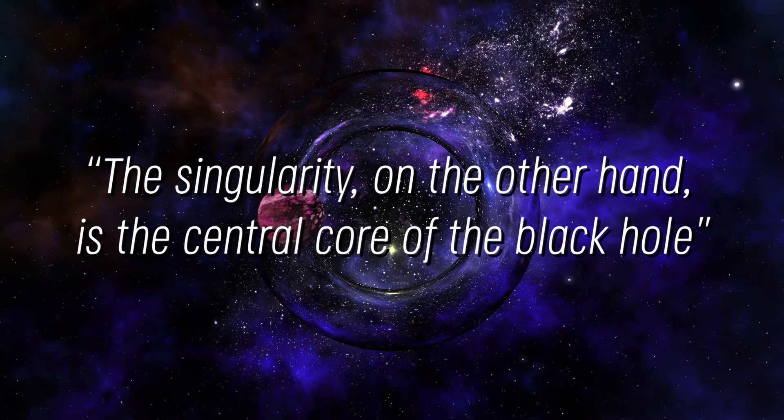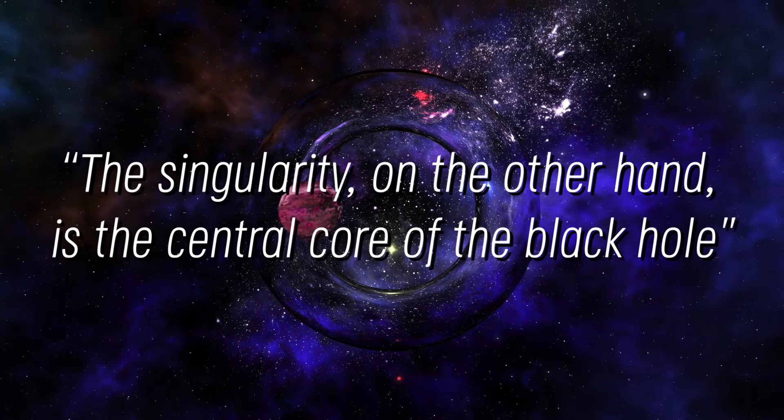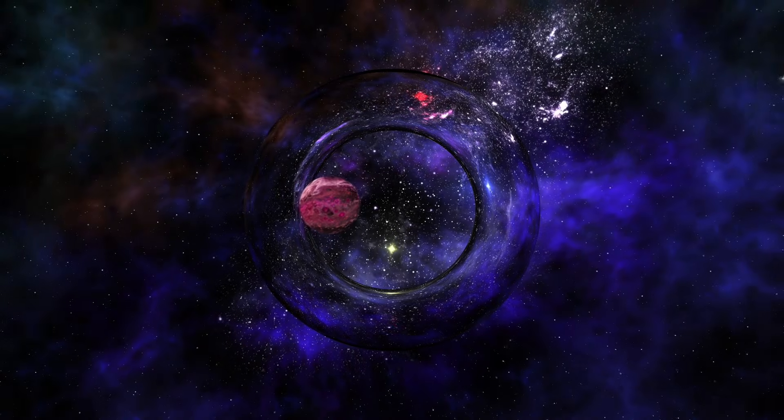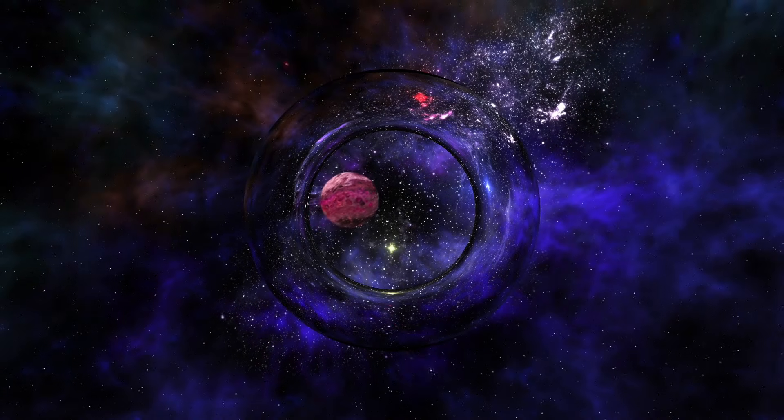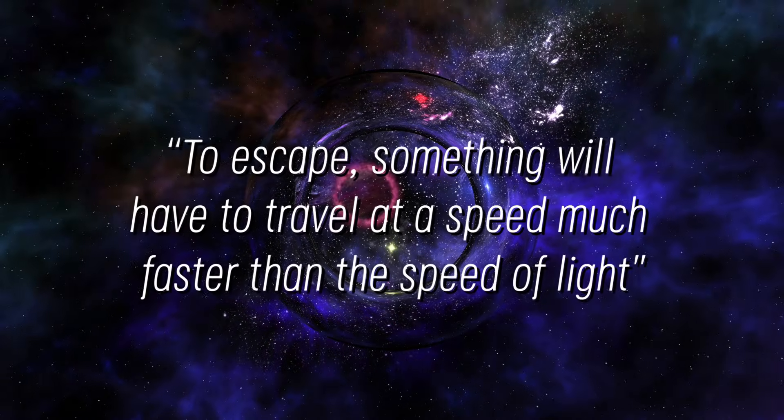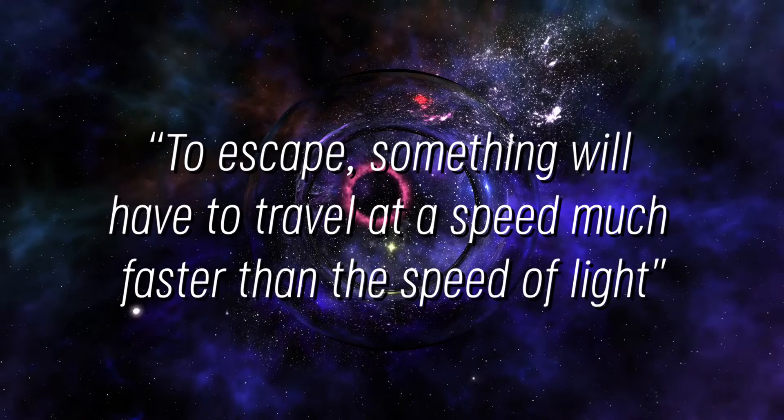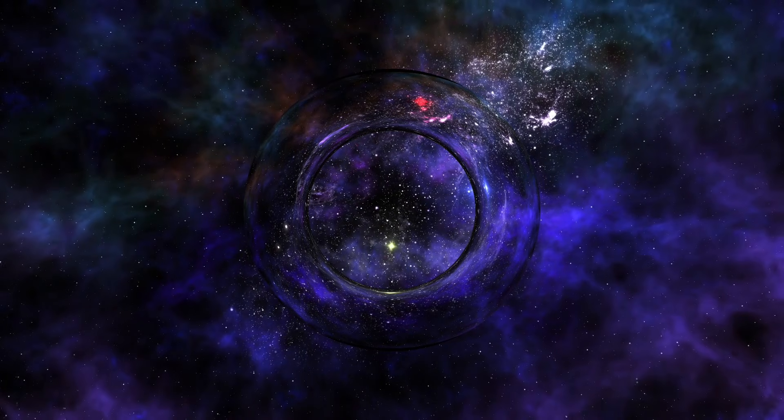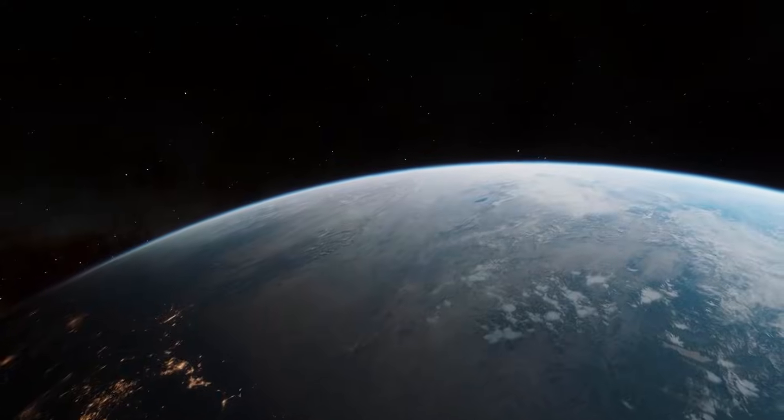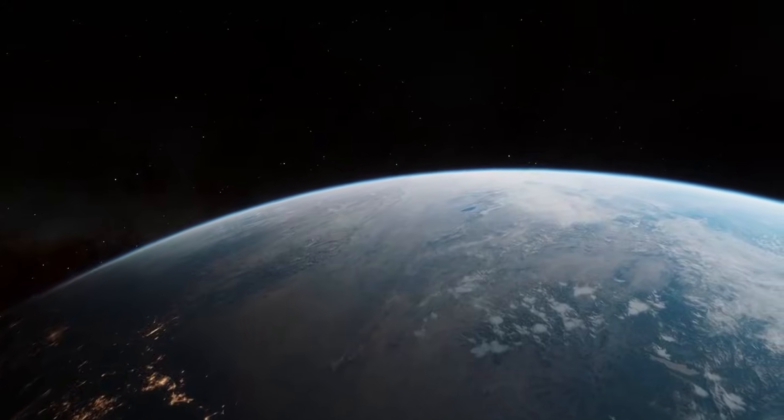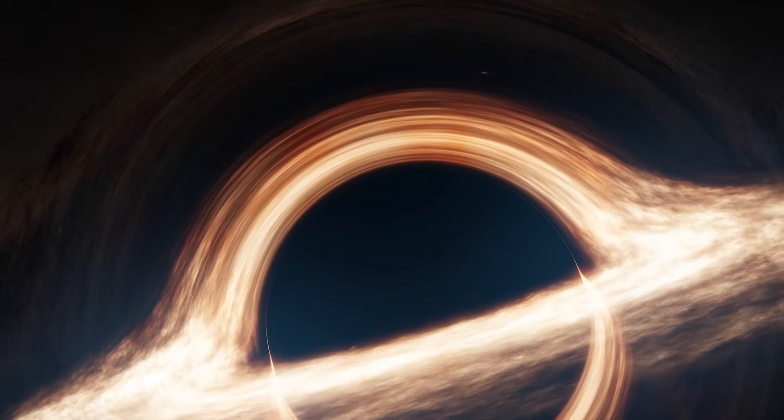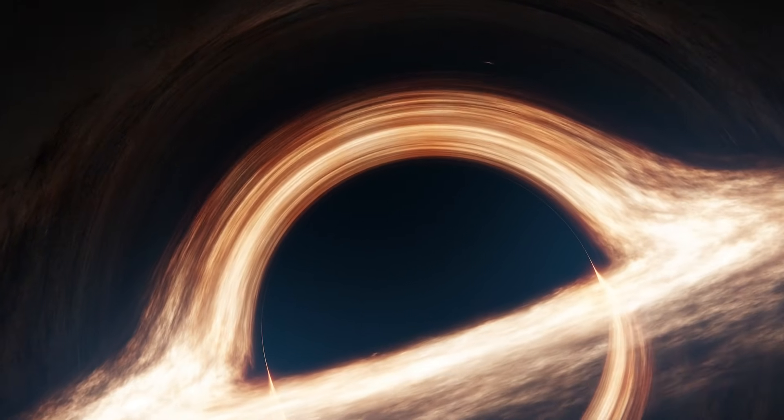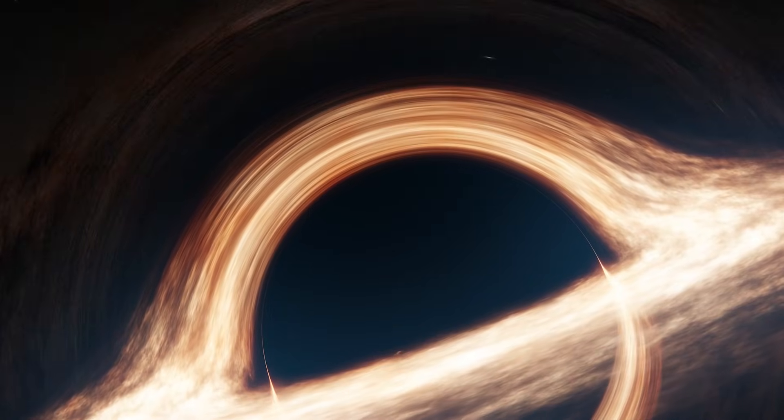The singularity, on the other hand, is the central core of the black hole, where gravity is so intense and constant that literally nothing can get out of there. To escape, something will have to travel at a speed much faster than the speed of light, which has so far proven impossible. It is important to note that gravity on Earth works differently. If it were similar to black hole gravity, we would not be able to survive the way we do once we have crossed the event horizon.